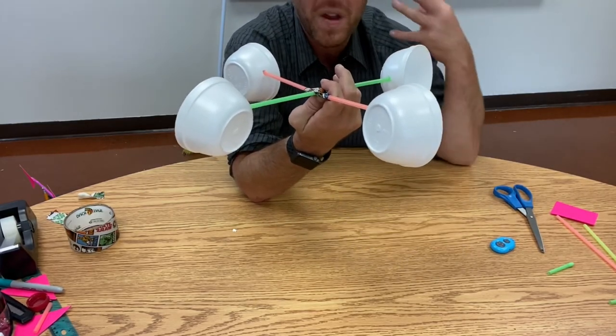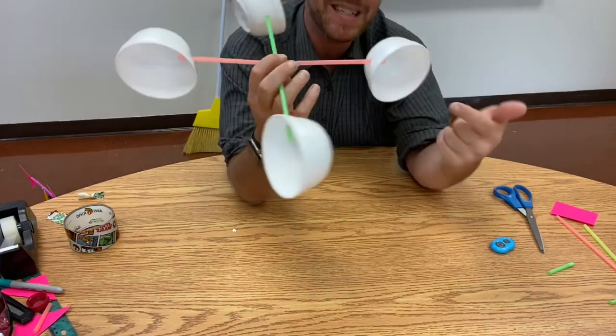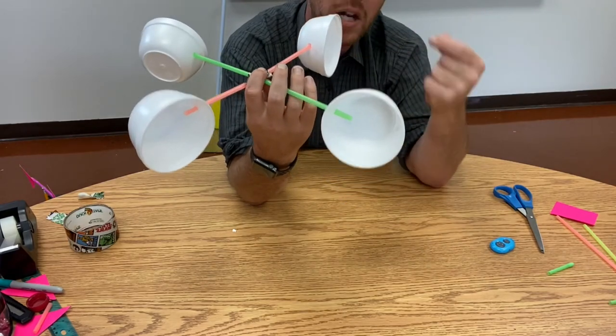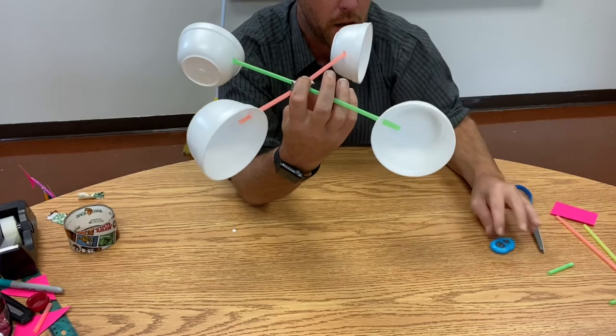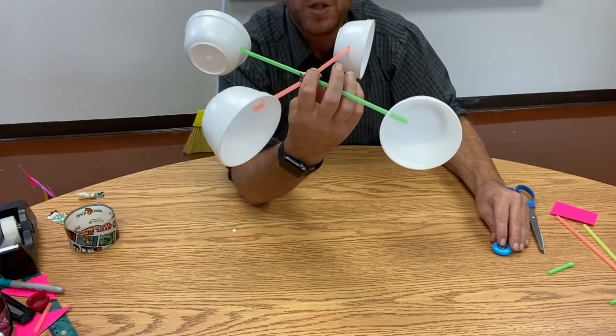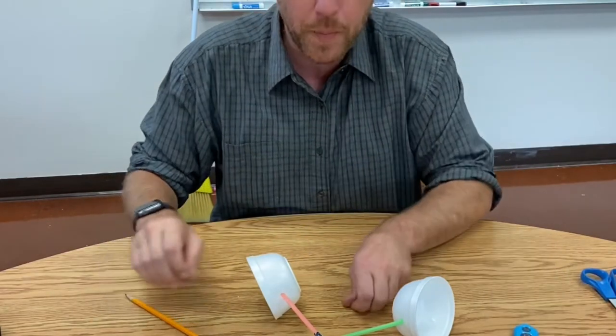This is important because what the anemometer does is it captures air. The faster the wind speed and the faster the air is moving, the faster this is going to spin. But it needs these cups to catch the air and to give it enough power to actually spin.